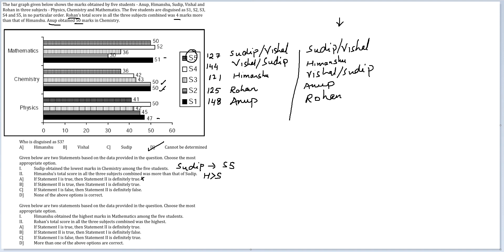If Statement 2 is true — Himanshu greater than Sudip — then Sudip does not have to necessarily be S5. In the second case, if Himanshu is S4 scoring 144, Sudip could be at 121 as S3 and not S5. So if Statement 2 is true, Statement 1 is not definitely true either.